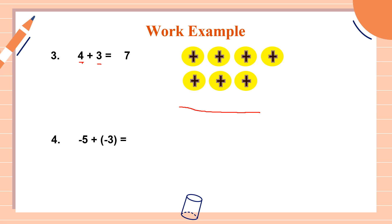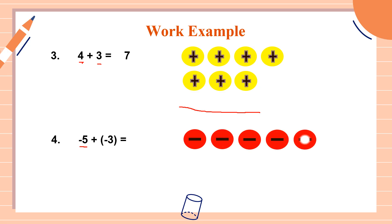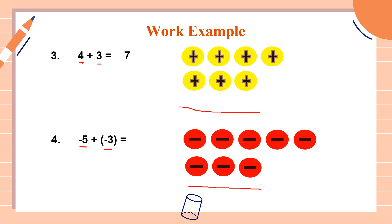Example number four: negative five plus negative three — both negatives. Negative five means five red chips: one, two, three, four, five. Negative three means three more red chips: one, two, three. Do we have any zero pairs? A zero pair is one yellow chip and one red chip — we don't have any. So just count all the chips: one, two, three, four, five, six, seven, eight. Since they're all negative, our answer is negative eight.